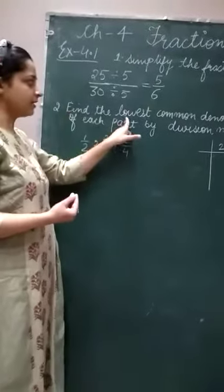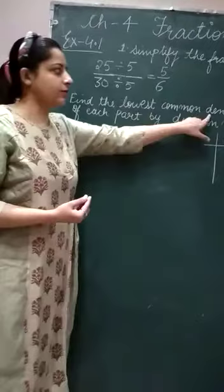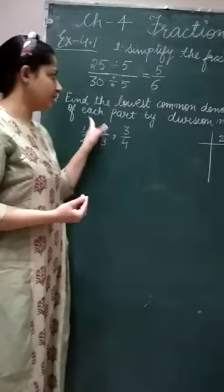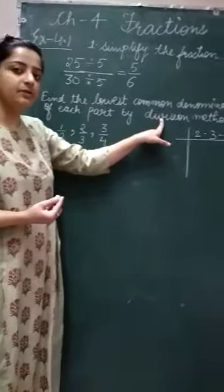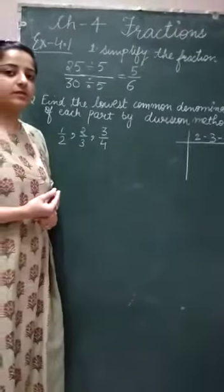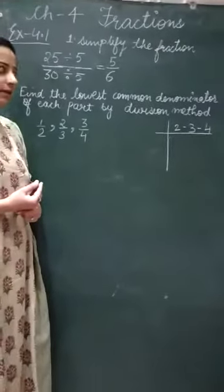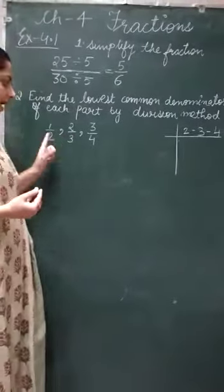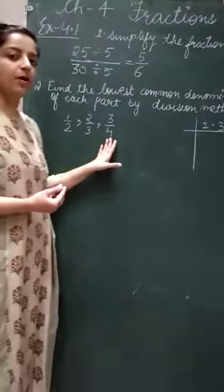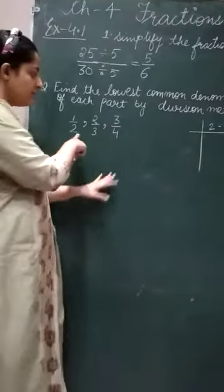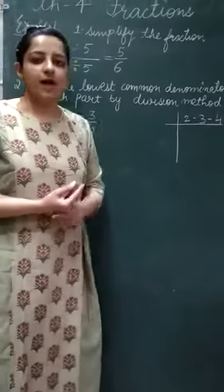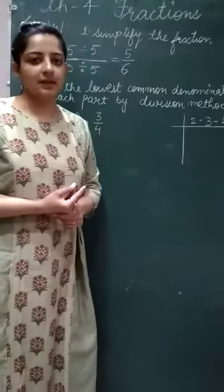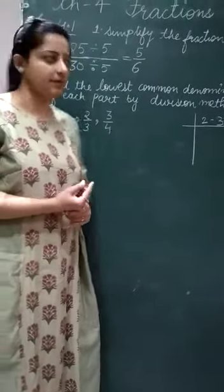The next question is to find the lowest common denominator of each part by the division method. Lowest common denominator means you have to find the LCM of the denominators. The denominators given are 2, 3, and 4.